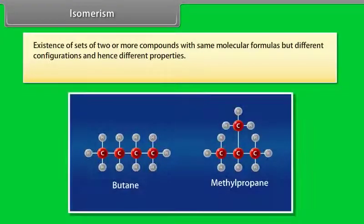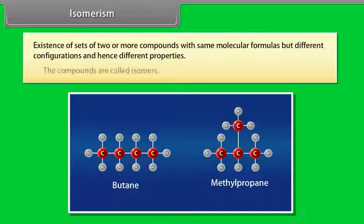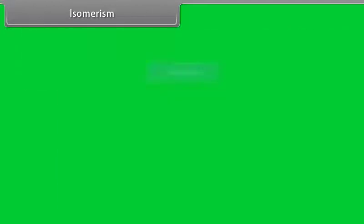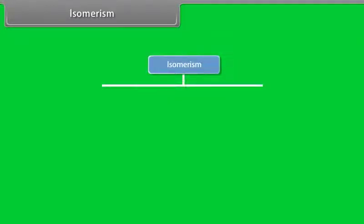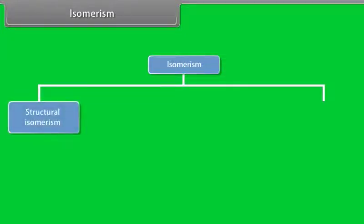Isomerism is the existence of sets of two or more compounds with same molecular formulas but different configurations and hence different properties. The compounds are called isomers. Different types of isomerisms — isomerism can be grouped into structural and stereo-isomerism.